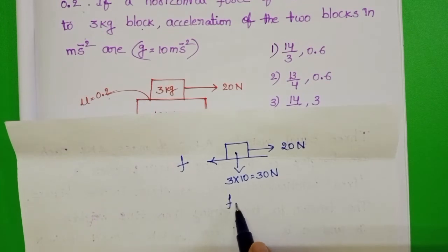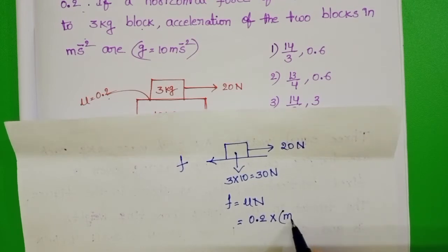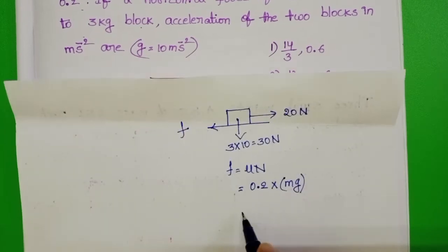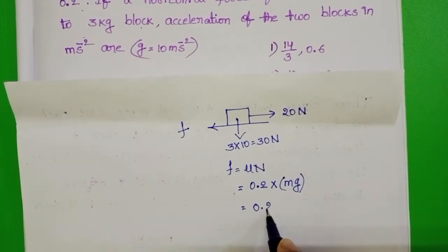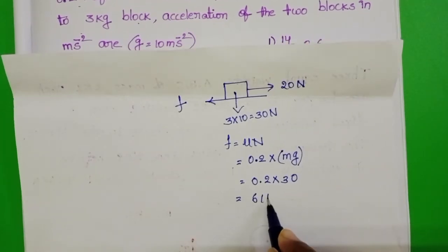Here, frictional force F equals mu n. Given coefficient of friction is 0.2. Normal force is mg. 0.2 into 30, that equals 6 N.